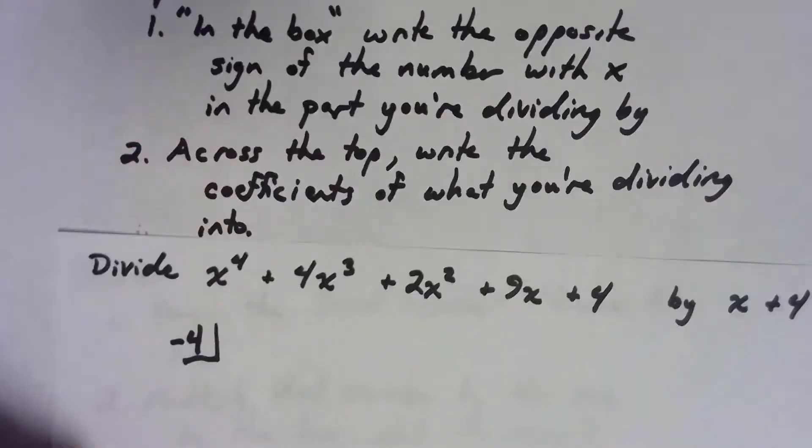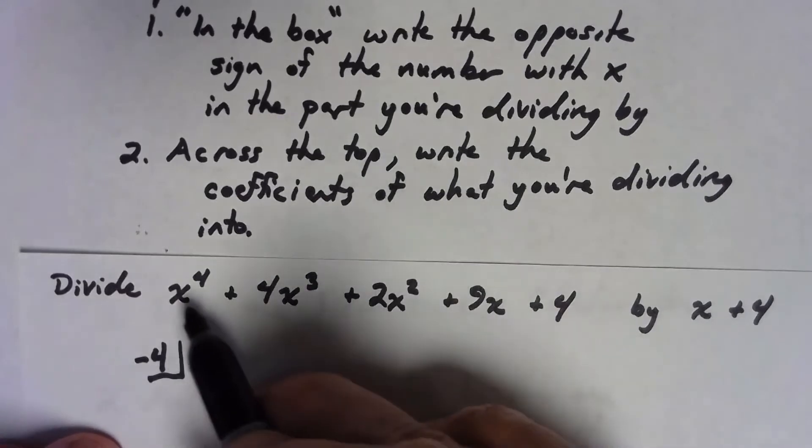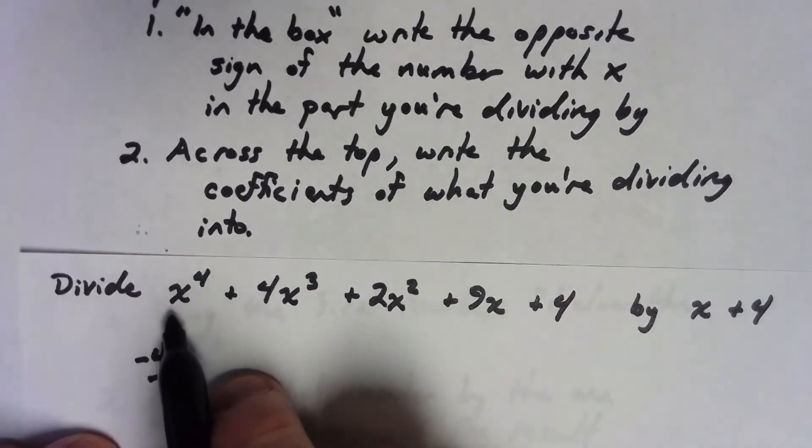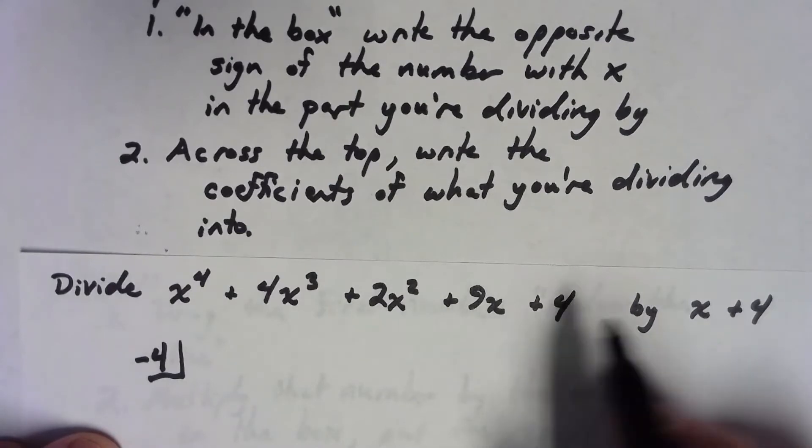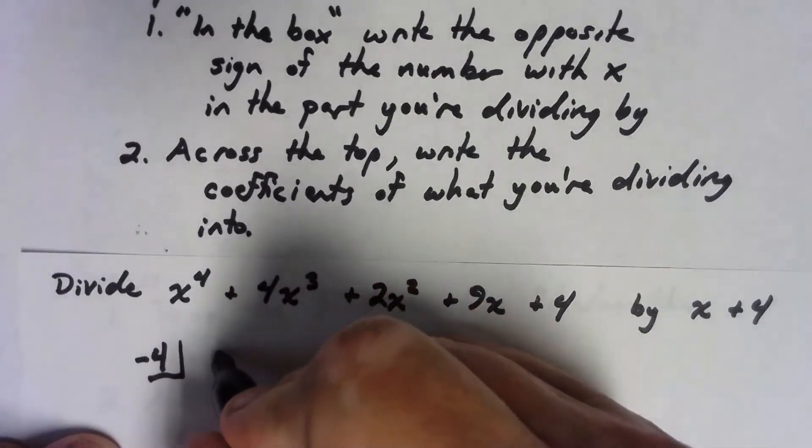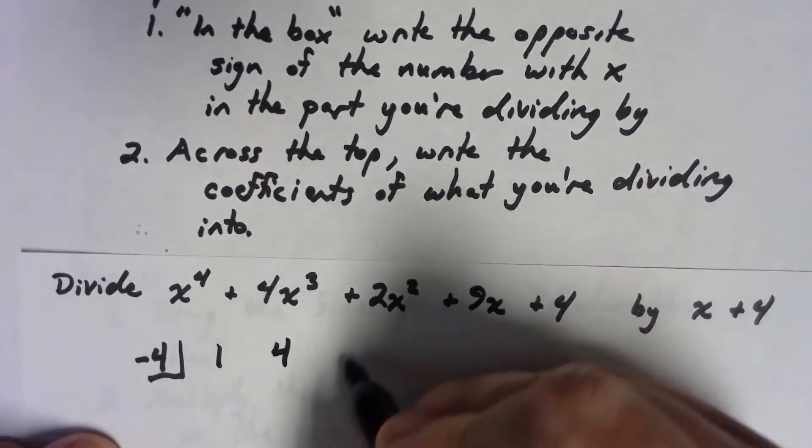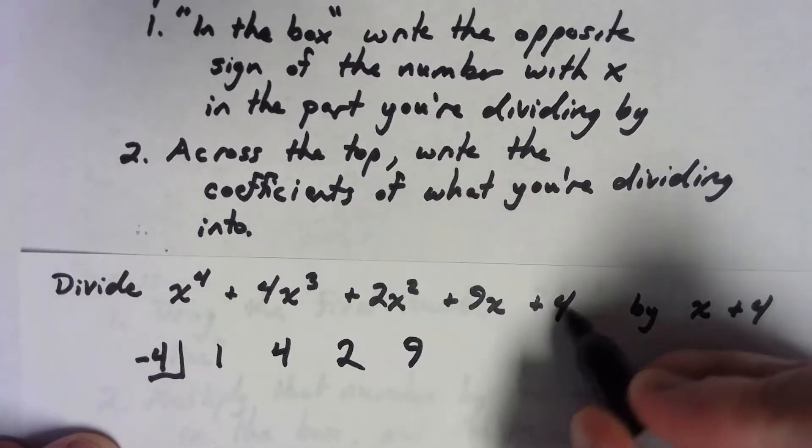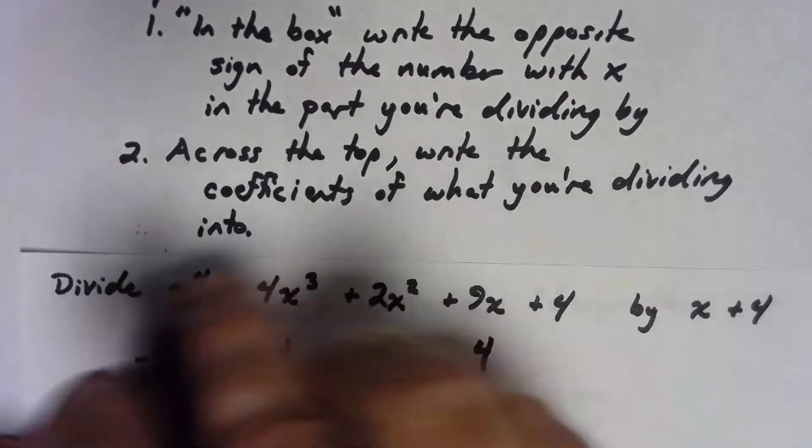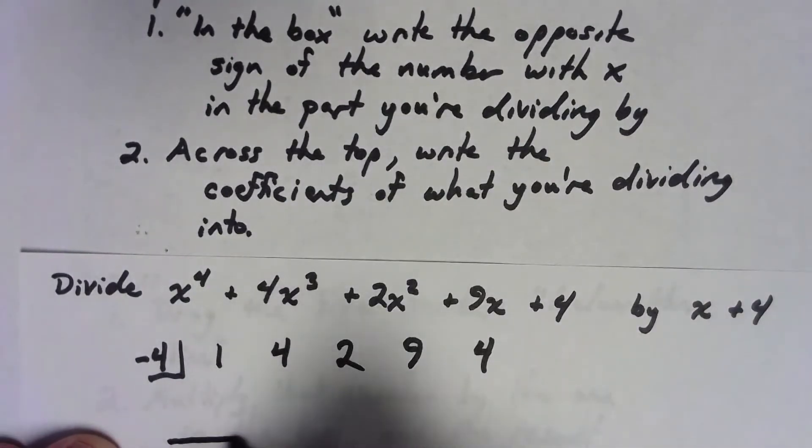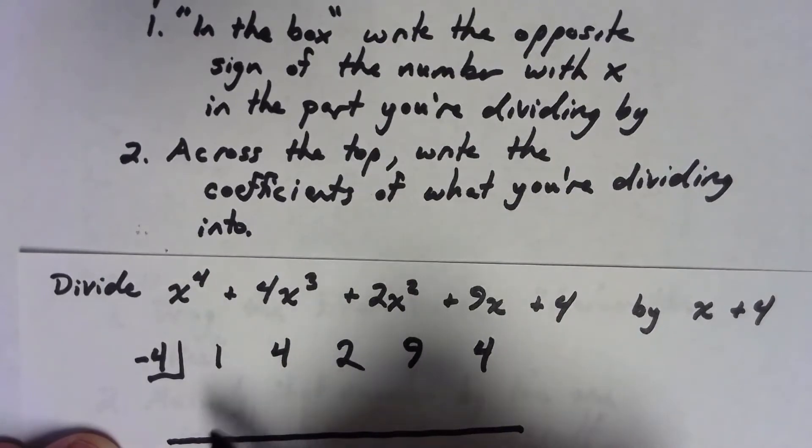So the next thing is across the top, we're going to write the coefficients of what we're dividing into. So I'm dividing into x to the fourth plus 4x cubed plus 2x squared plus 9x plus 4. The coefficient of x to the fourth, well that's a 1, 4x cubed is obviously a 4, then a 2, then a 9, and I'm even going to write that 4 down as well. I didn't write it in my steps, but I'm going to draw a line across like this, leaving a little bit of space for a number in there.